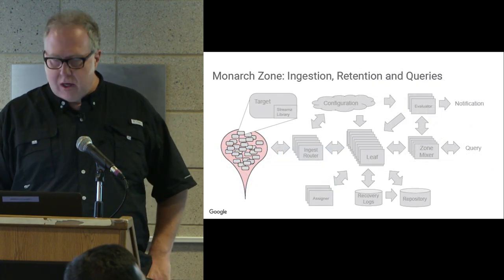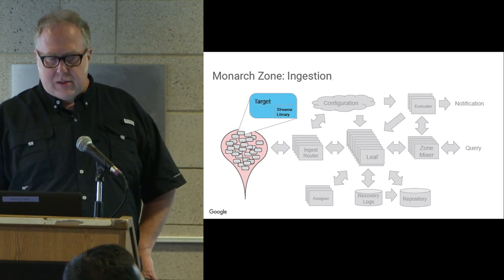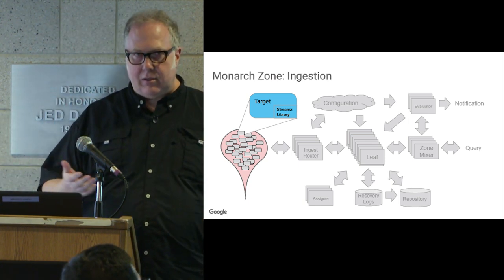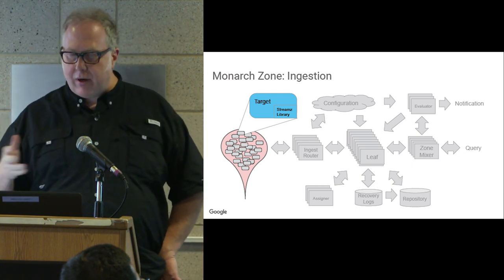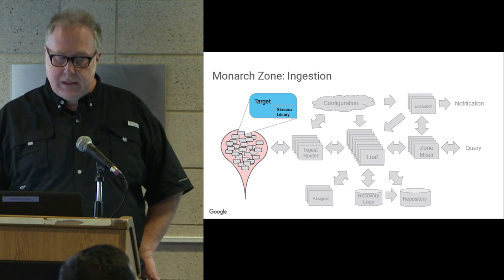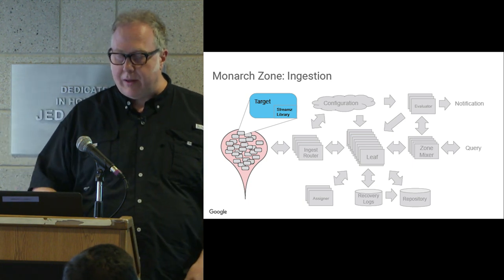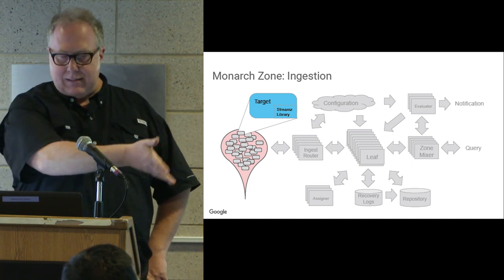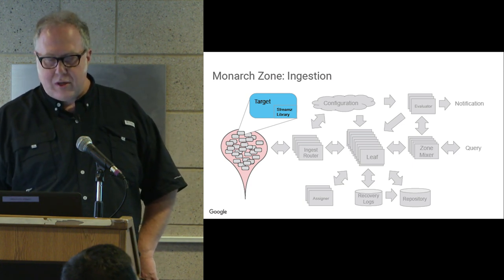Let's look inside one of these zones. A Monarch zone handles ingestion, queries, retention, evaluation, notification, et cetera. Ingestion starts with some sort of monitored entity that you care about — maybe it's your jobs running on our cluster, maybe you're a network person who cares about the hardware. Everything is instrumented through our library called StreamZ, which defines classes that define metrics — the unit of information that we monitor. It has the ability to contact our system and send data about that entity to Monarch.